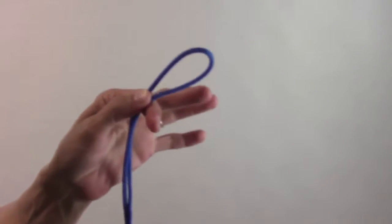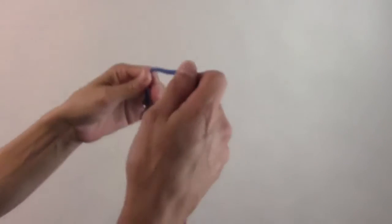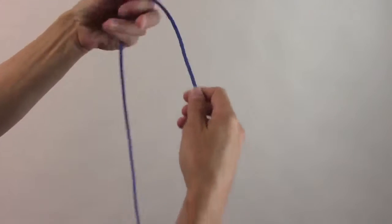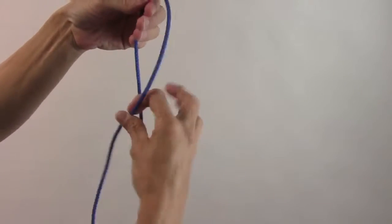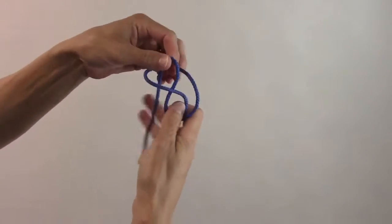Okay, today is the angler loop. Angler loop is pretty simple. What you're going to do is make a regular overhand loop.